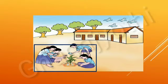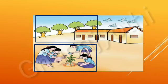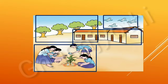Now, look at this picture, students, and name the things that are 4 in number. In this picture, there are 4 students, 4 trees, 4 birds, 4 windows, and 4 doors.